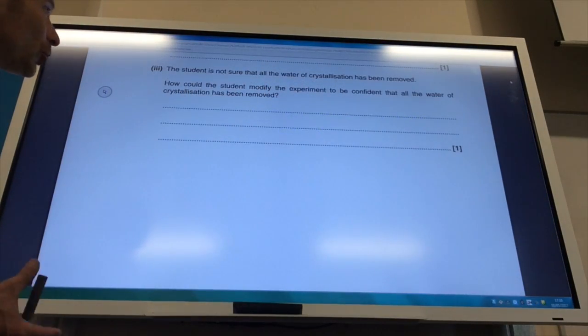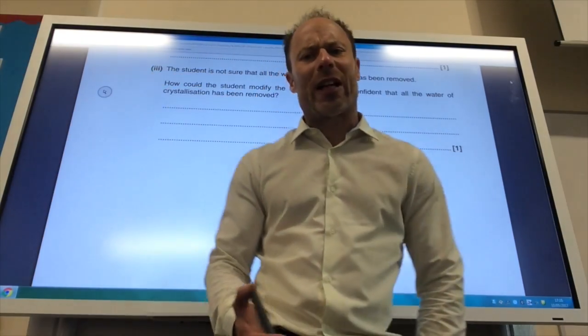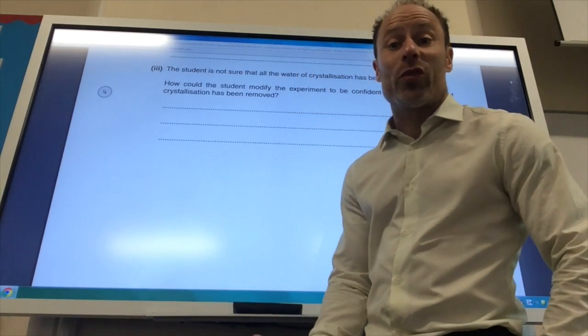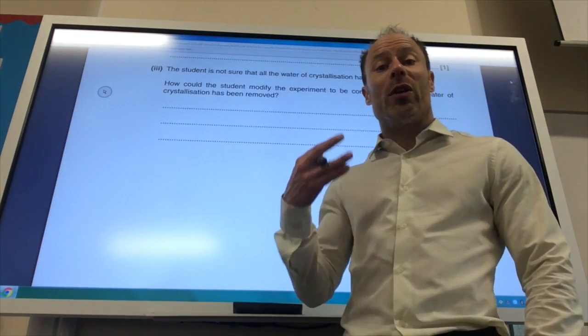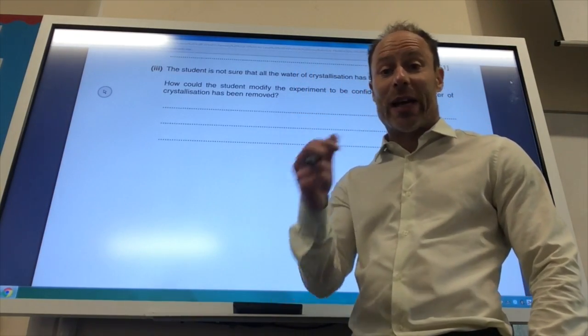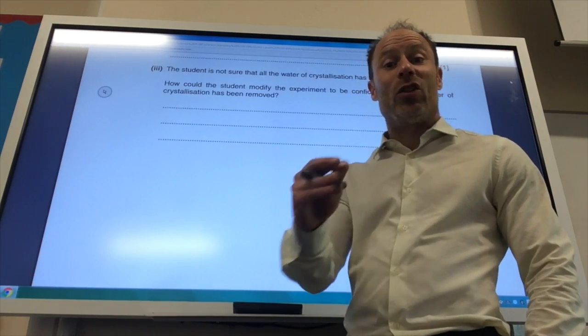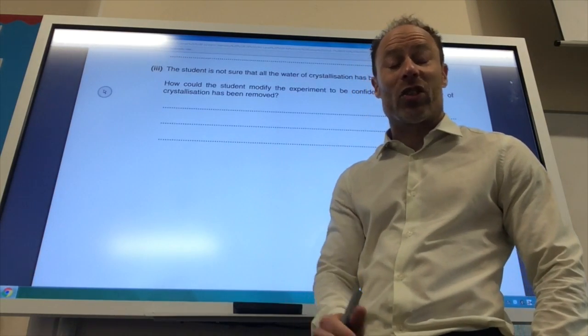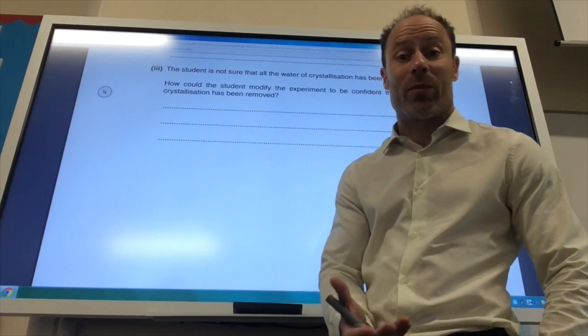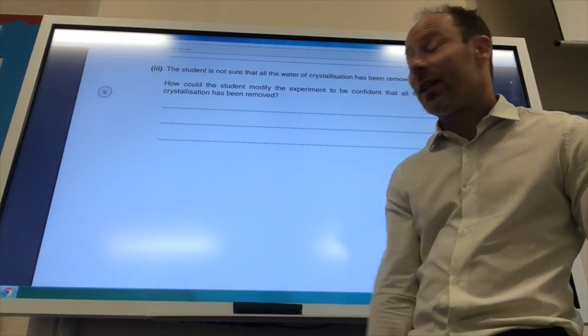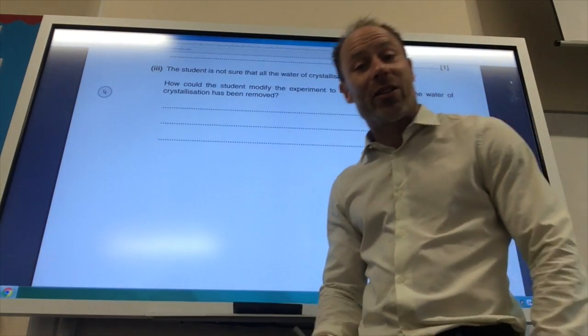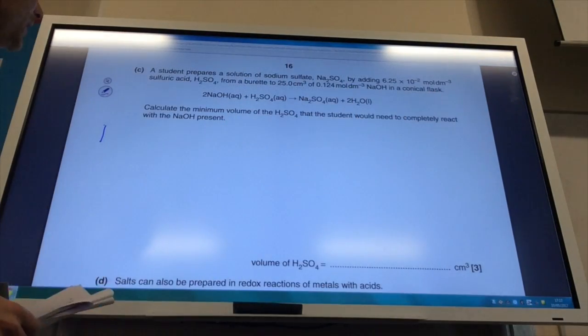And then it says the student's not sure that all the water has been removed. So, how is it, well, you'd heat it to constant mass. So, you would heat it up, let it cool down, weigh it, then heat it up again, weigh it again, and you keep doing that until the mass doesn't change, and once the mass has stopped changing, you know that all the water has been lost. So, you heat to constant mass.